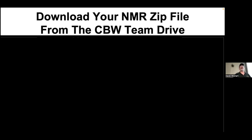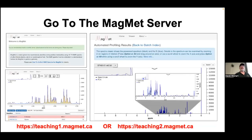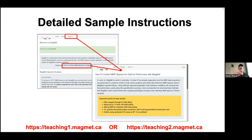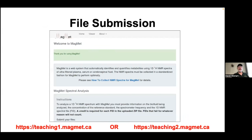If you're not doing NMR first, don't download the NMR file. If you are doing NMR, go to teaching1.magnet or teaching2.magnet. You'll see an about menu that explains things. Once you've started, you'll be able to submit your spectra. It says welcome to Magmit, and if you scroll down it'll explain instructions and show you how to upload and analyze.